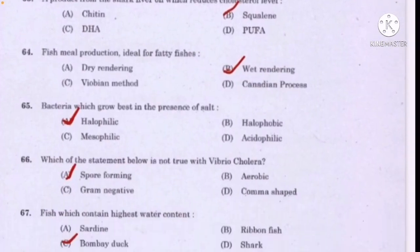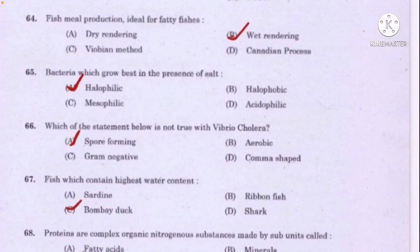Fish meal production ideal for fatty fishes — correct answer option B: wet rendering. Bacteria which grow best in the presence of salt — correct answer option A: halophilic. Which of the statements below is not true with Vibrio cholerae — correct answer option A: spore forming. Fish which contains highest water content is — option C: Bombay duck.